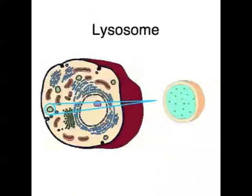Another organelle is the lysosome. Lysosomes are fluid-filled sacs containing dissolved digestive enzymes, and they use their enzymes to destroy unwanted cell parts or damaged molecules. There are also peroxysomes, which contain enzymes that destroy toxic materials, like hydrogen peroxide for example.